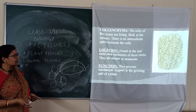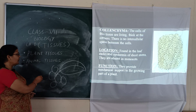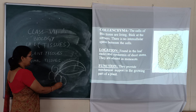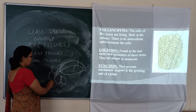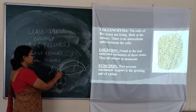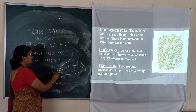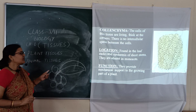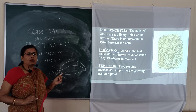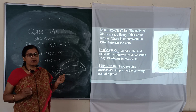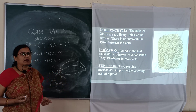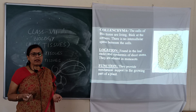Colenchyma has intercellular spaces covered with lignin — lignin being a sticky substance — and it is present at the stalk of the leaf. Its function is providing mechanical support, giving leaves and branches their own strength so they are not damaged by climatic conditions.